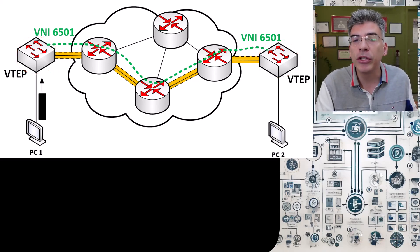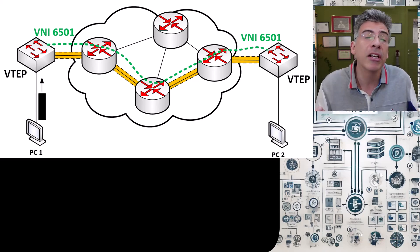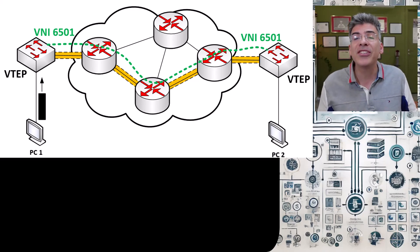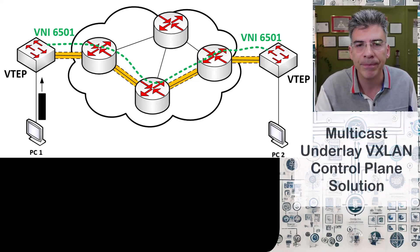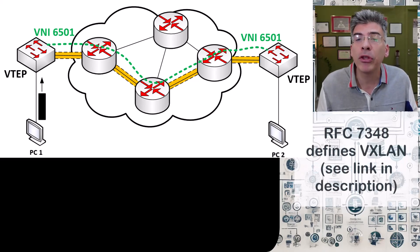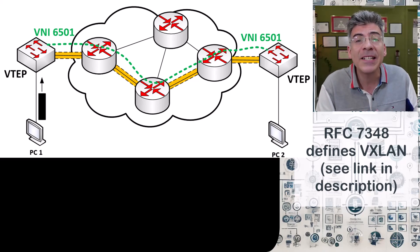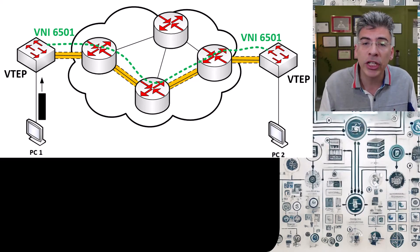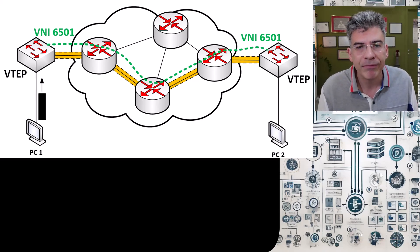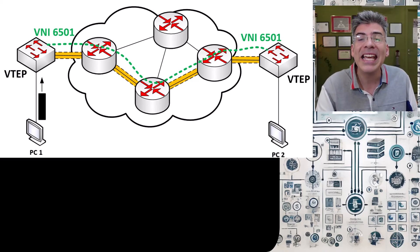We've already looked at the solution that manually maps VTEP peers based on the VNIs configured in each one. However, this solution is not scalable. In this video, we'll take a look at a more scalable option, which is the multicast underlay solution. It's important to note that RFC 7348, which defines VXLAN, has included this specific multicast mechanism for the control plane. There are other solutions as well, which we'll look at in the future, but this is what is recommended by the RFC.